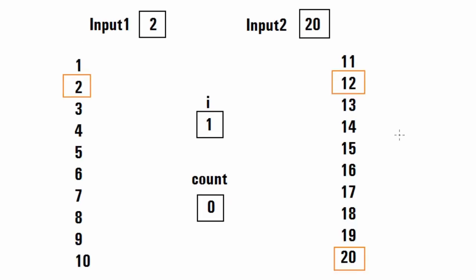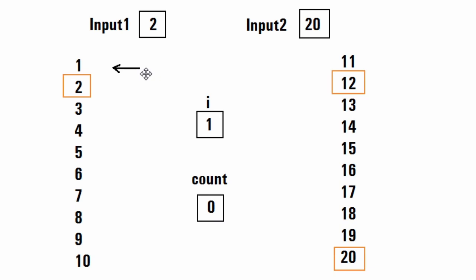First, let's see the logic to solve this problem. Assume input one is two and input two is twenty. We take a for loop with variable i starting from one, iterating till twenty. We also have a variable count initialized to zero. For each value of i, we compare it with input one — if they match, we increment count by one, otherwise we move to the next number. So when i equals two, it matches input one and count is incremented.